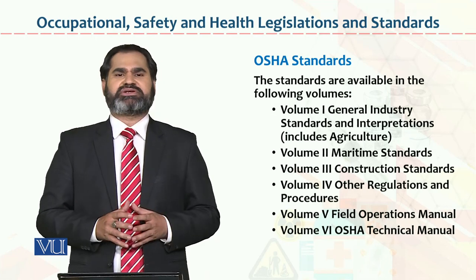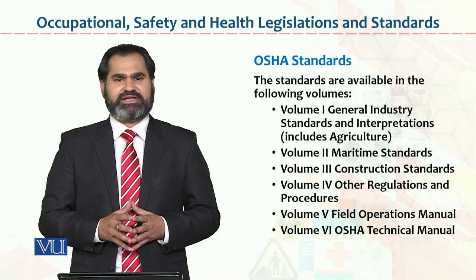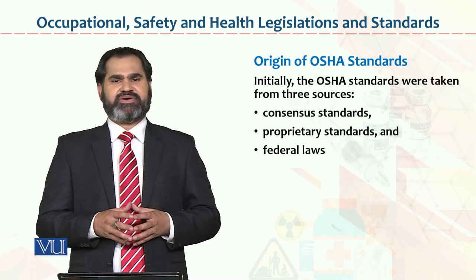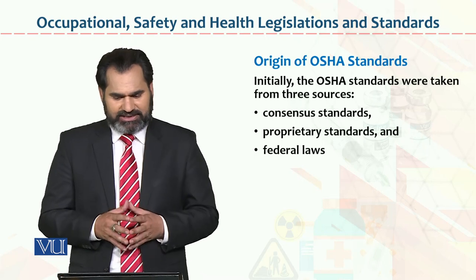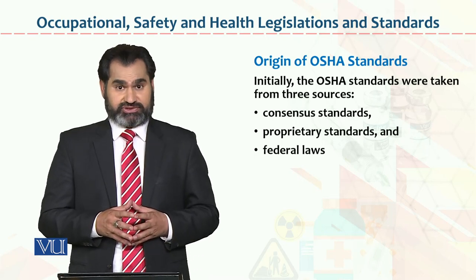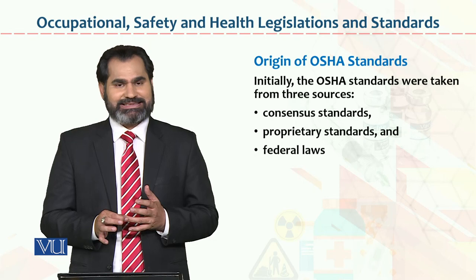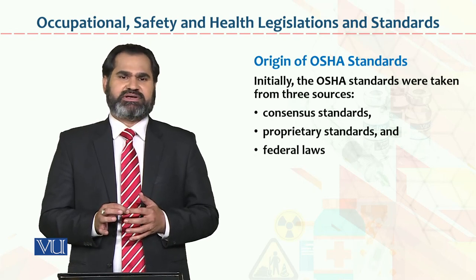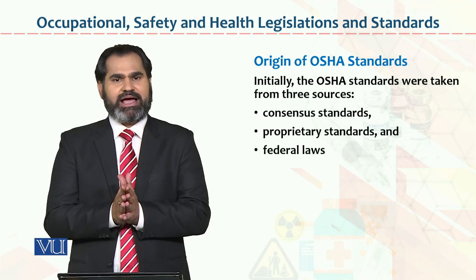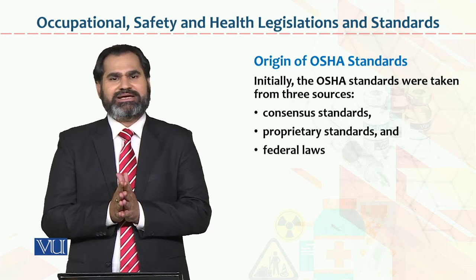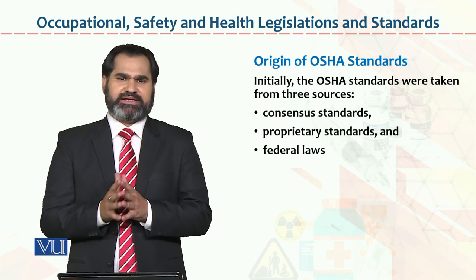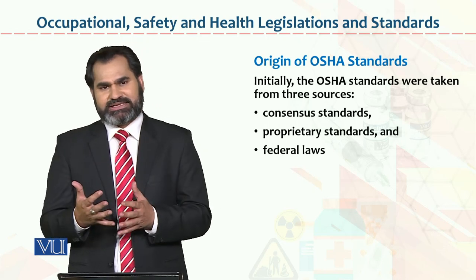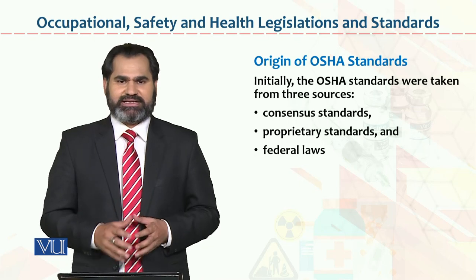This data from Occupational Safety and Health Association standards has been published. Initially, OSHA standards were taken from three sources: number one, consensus standards; number two, proprietary standards; and number three, federal laws. These are the sources and bases of OSHA standards, and we have to take these standards for design purposes.